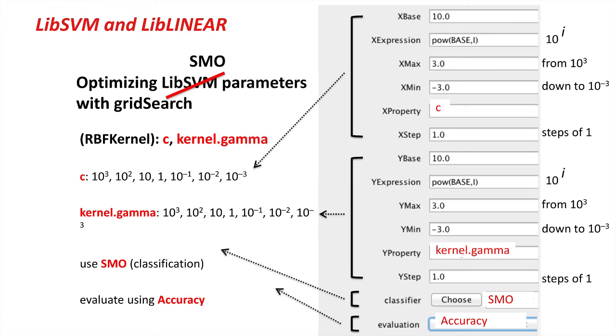Grid search is fairly complicated to use, but it's necessary to optimize the parameters when using nonlinear support vector machines.